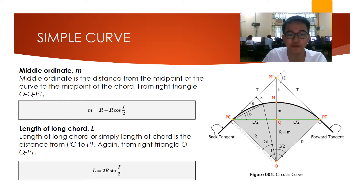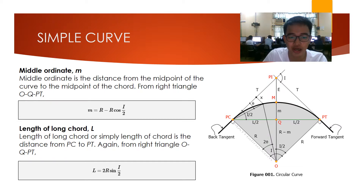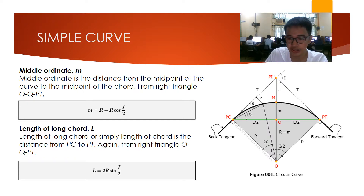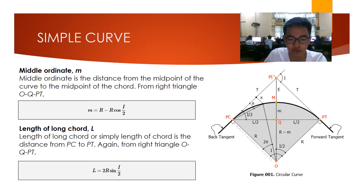From the right triangle O-Q-Pt from the figure, we can derive this formula: M is equal to R minus R cosine I over 2. We also have the length of chord, that is L. The length of chord is the distance from PC to PT. Again from right triangle O-Q-Pt, we can derive this formula: L is equal to 2R sine I over 2.